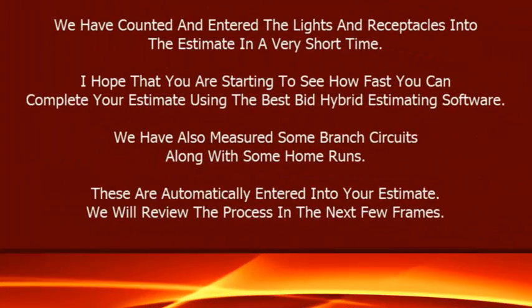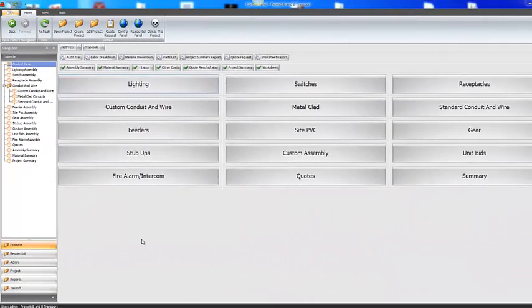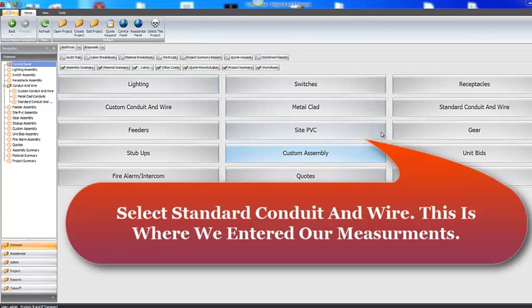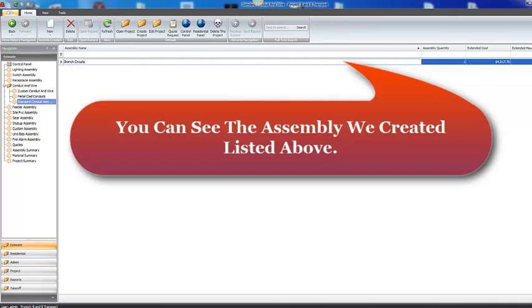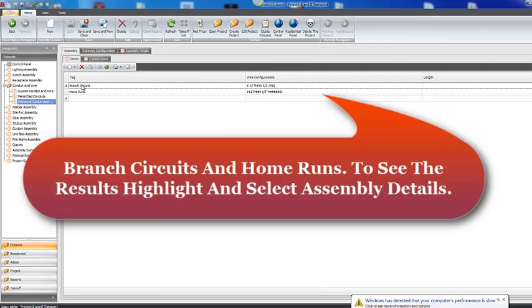We have counted and entered the lights and receptacles into the estimate in a very short time. I hope you are starting to see how fast you can complete your estimate using the BestBid Hybrid Estimating Software. We have also measured some branch circuits along with some home runs. These are automatically entered into your estimate. Select Standard Conduit and Wire — this is where we entered our measurements. Branch Circuits and Home Runs: to see the results, highlight and select Assembly Details. The results are shown below.